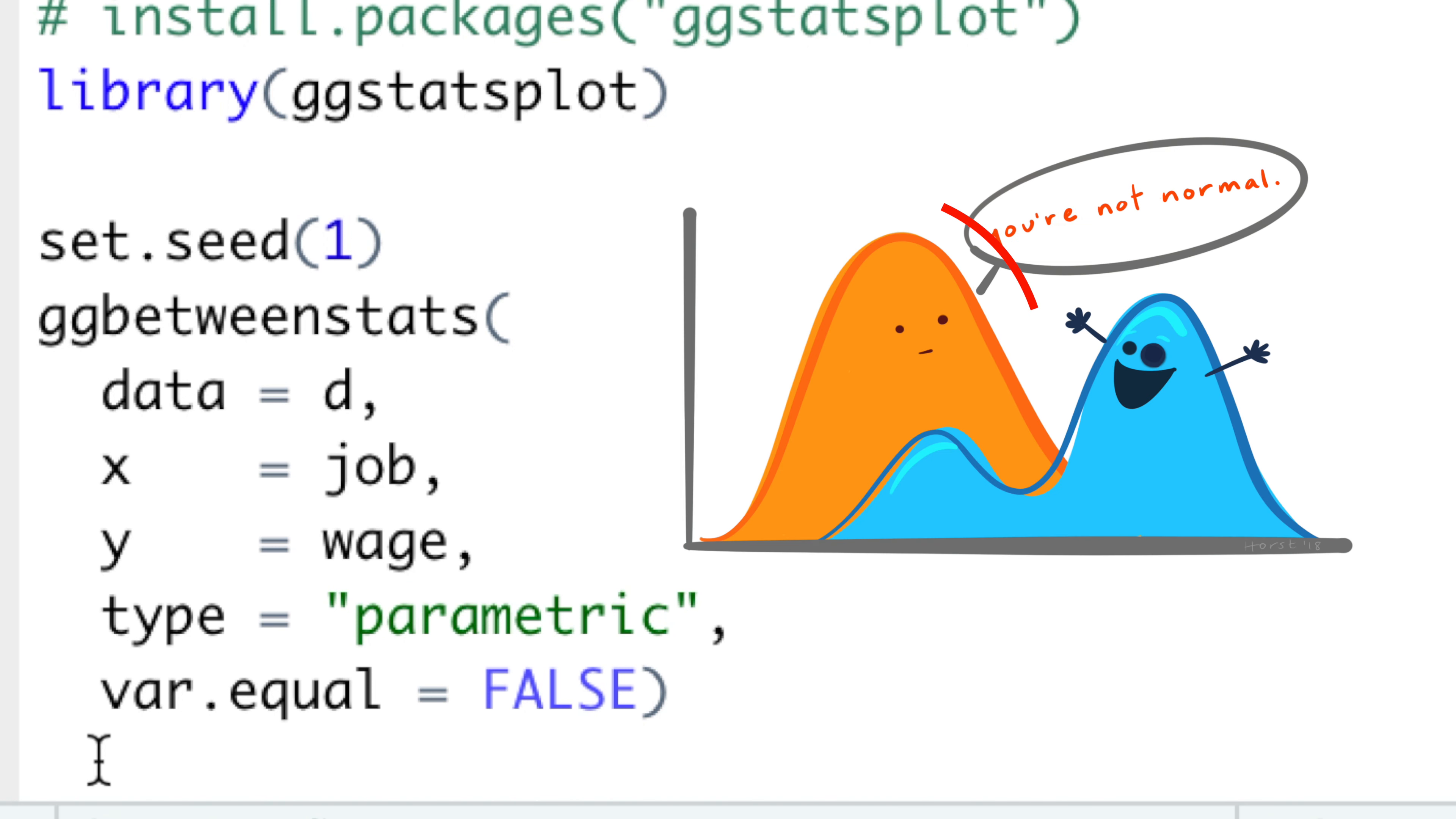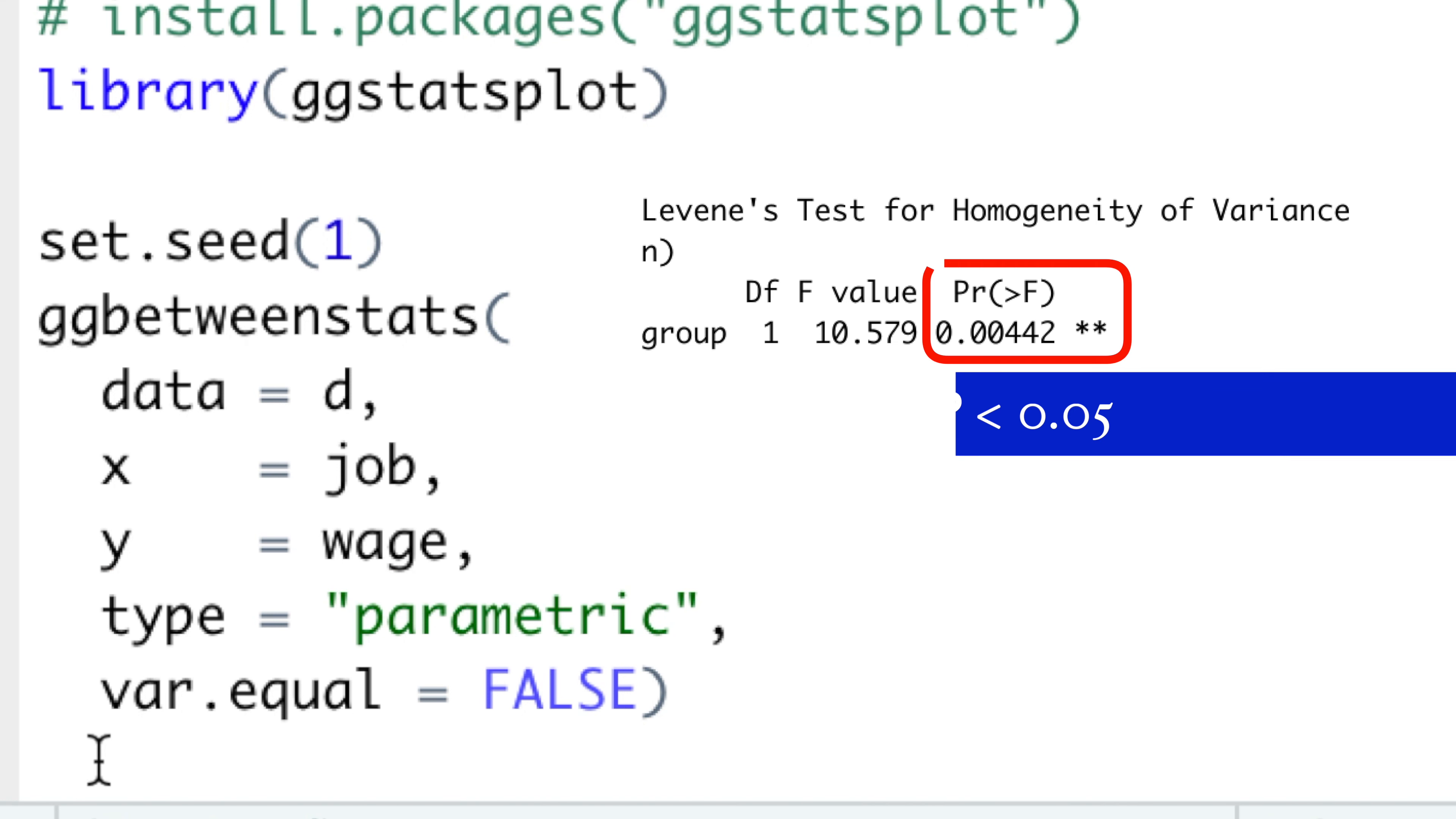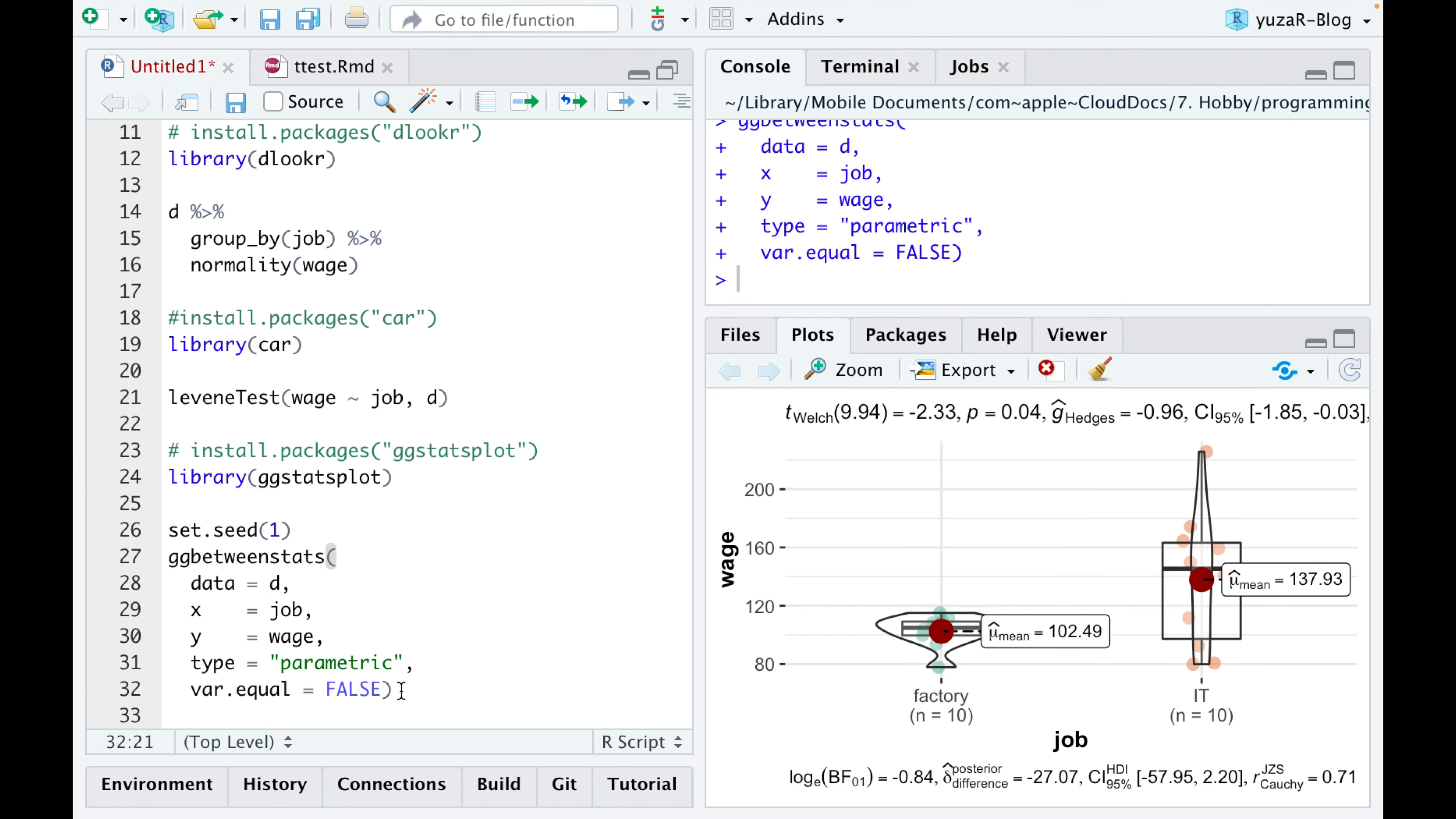Then, since our data is normally distributed, we'll choose a parametric type of statistical approach. And since our jobs have different variances, we set var.equal argument to false. Such simple command results in this statistically rich and publication-ready plot.